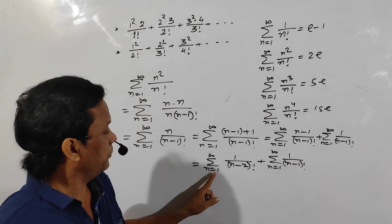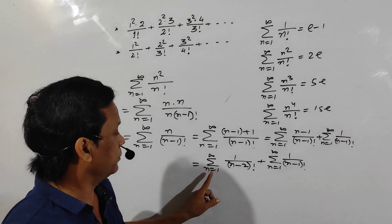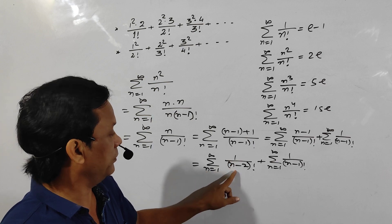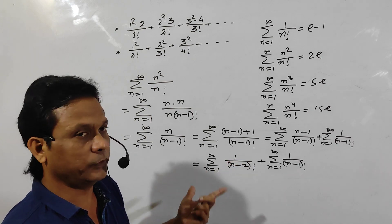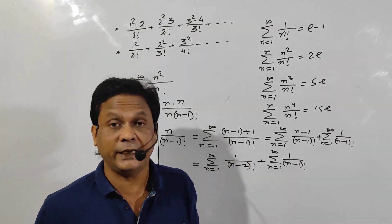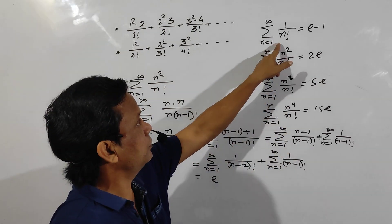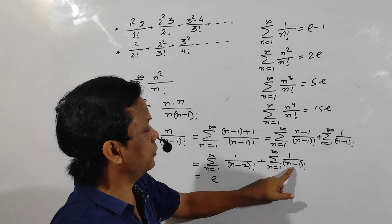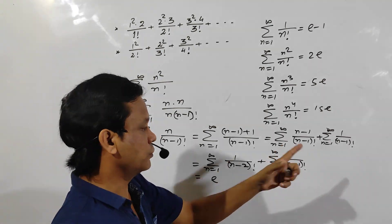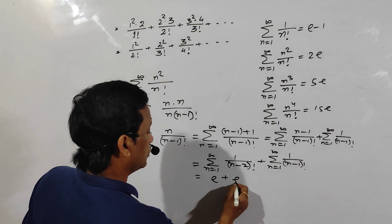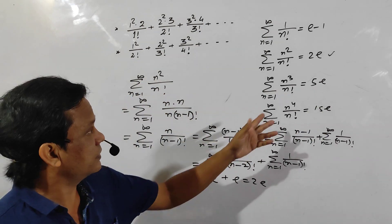If we put n equals 1, we get a negative factorial which is impossible, so the first sum starts from n equals 2. That gives us 1/(0 factorial) + 1/(1 factorial) + 1/(2 factorial) + ..., which is E. The second sum, putting n equals 1, gives 1/(0 factorial) + 1/(1 factorial) + ..., which is also E. So E plus E equals 2E. Likewise you can prove the remaining two formulas.